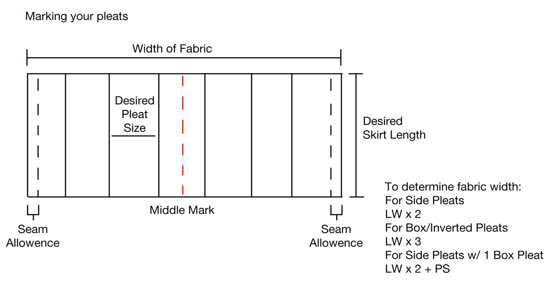Now we are going to mark our pleats out on our fabric. You'll start out at one of your sides of your fabric, marking your seam allowance. Then go on to mark your desired pleat size length along your fabric until you reach the end. Also mark the midpoint of your fabric.